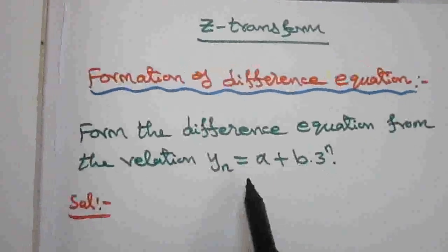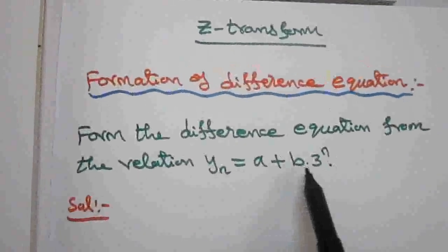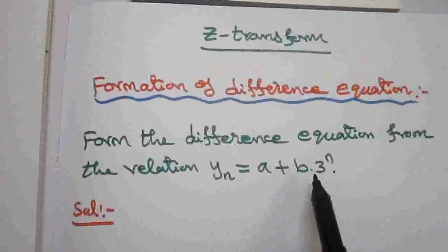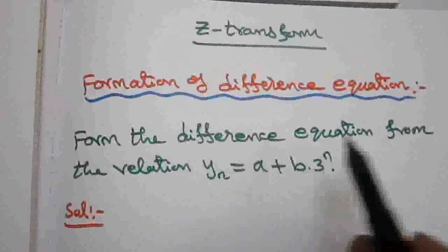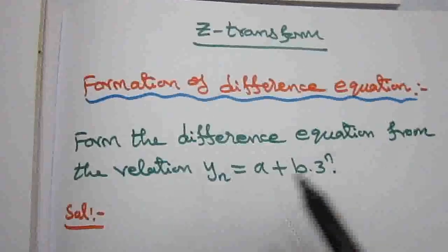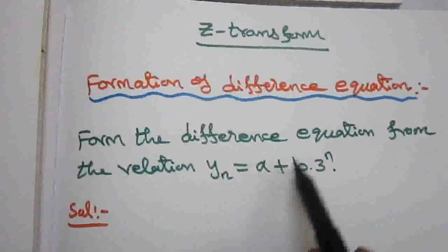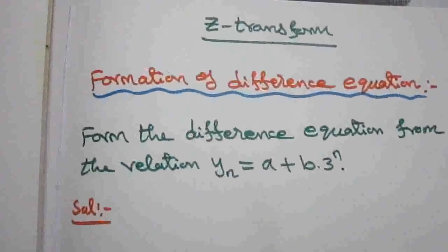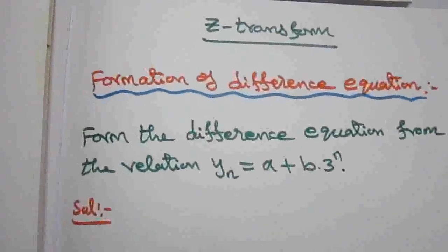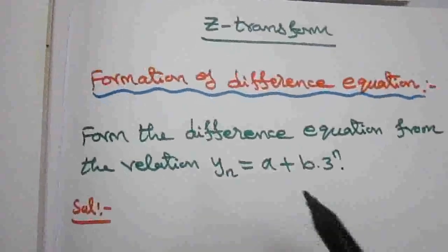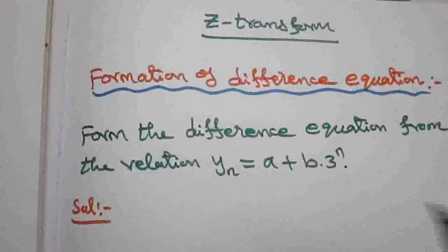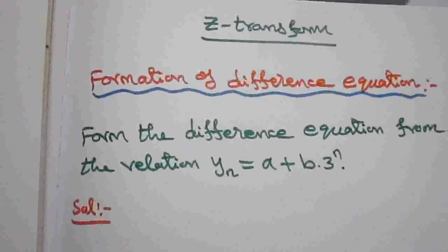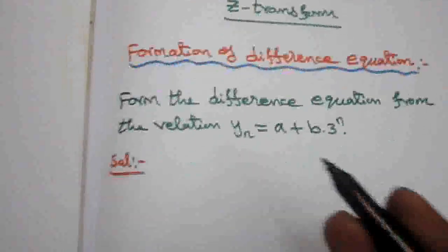In the relation there are two arbitrary constants. So to form the difference equation I want to eliminate these two arbitrary constants. To eliminate these two arbitrary constants I am going to use the determinant method.